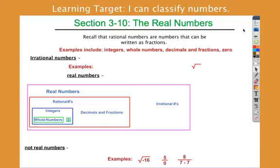We talked about whole numbers in Chapter 1 and how to solve algebra with that. We talked about integers in Chapter 2 — that's all the whole numbers and their opposites. So whole numbers would be 1, 2, 3, 4, 5, all the way up to positive infinity, and integers would include the opposites: negative 1, negative 2, negative 3, and so on.